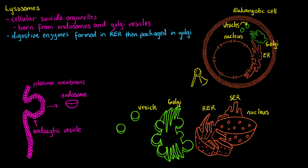The enzymes are then packaged within the Golgi apparatus. Ribosomes produce an amino acid chain during translation, which is then folded into an enzyme within the rough endoplasmic reticulum. This enzyme travels in a vesicle to the cis face — the receiving face — of the Golgi apparatus, where it is packaged into new vesicles. They are not just packaged but also labeled, and once labeled correctly, they leave in a new vesicle from the trans face, or shipping face, of the Golgi apparatus.